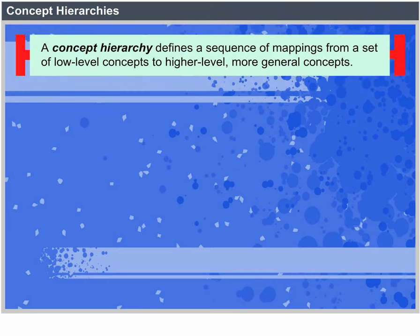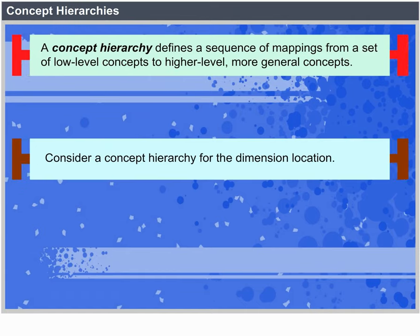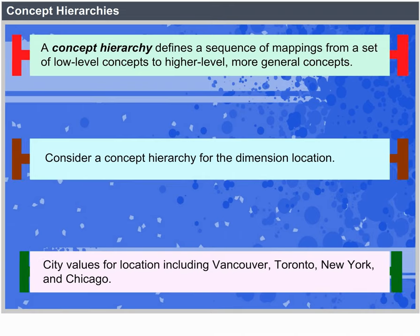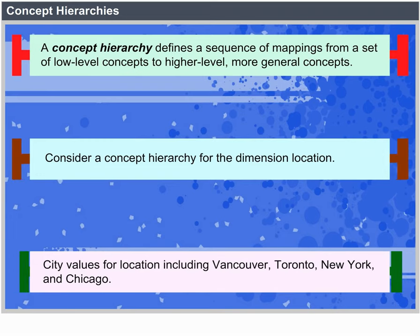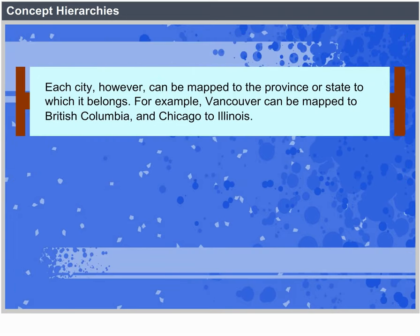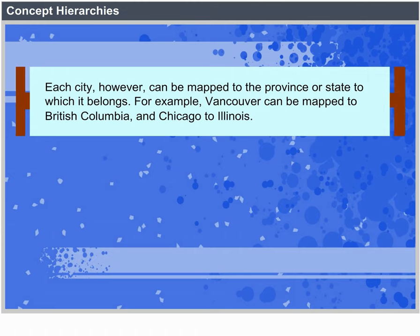A concept hierarchy defines a sequence of mappings from a set of low-level concepts to high-level, more general concepts. Consider a concept hierarchy for the dimension location. City values for location include Vancouver, Toronto, New York and Chicago. Each city, however, can be mapped to the province or state to which it belongs.